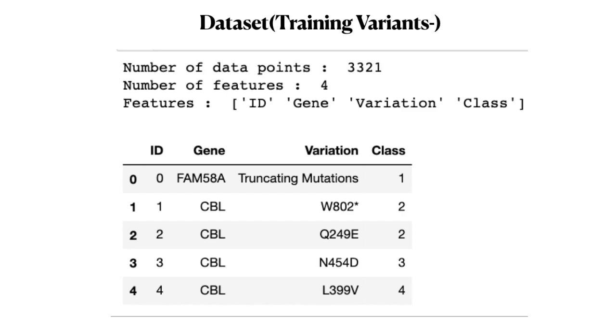This dataset is provided by a medical professional who has manually classified the variation shown by gene into a particular class. Point to be noted here: these classes which are defined as 1 to 10 do not mean that the patient has cancer. The class is understood by the doctor himself, and he will tell if the patient has cancer or not.